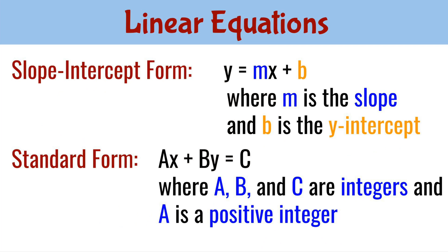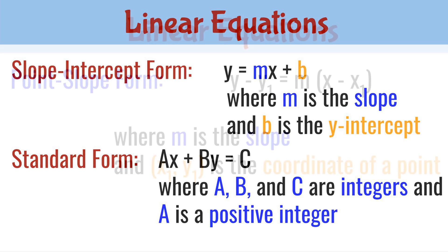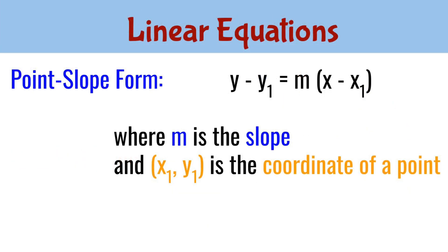Linear equations can be written in different forms. The first is called the slope-intercept form, y equals mx plus b, where m refers to the slope and b is the y-intercept. The second is called the standard form, ax plus by equals c, where the values for a, b, and c are integers, and a must be a positive integer. The third is the point-slope form, y minus y1 equals m times x minus x1, where m is the slope and x1, y1 is the coordinate of the given point.